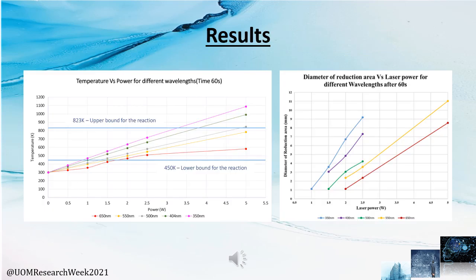We selected several wavelengths and powers for our project. Wavelengths were selected in the range of 350 to 650 nanometers, and powers in the range of 0.5 to 5 Watts. We plotted temperature versus power for different wavelengths over a time period of 60 seconds to find suitable laser combinations, using 450 Kelvin as the lower bound and 823 Kelvin as the upper bound for the reaction. Selected laser combinations were used for reduction, and temperature distributions along the surface were separately plotted. A resultant graph was generated to find the diameter of the reduction area according to laser power.